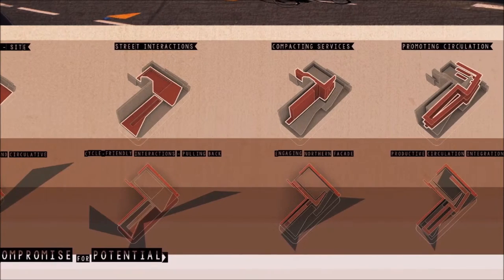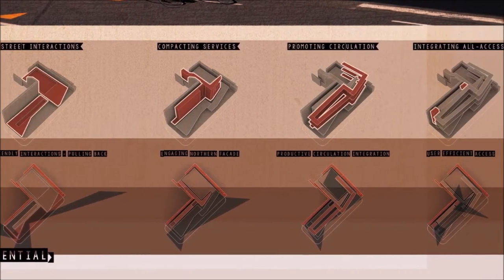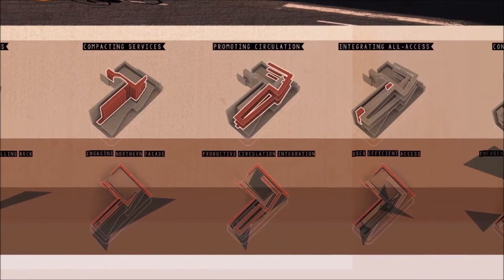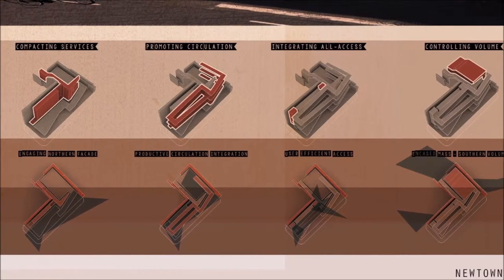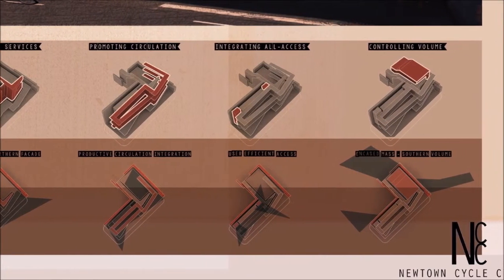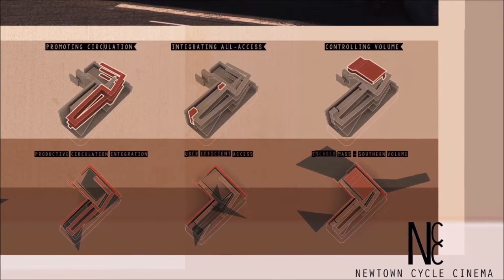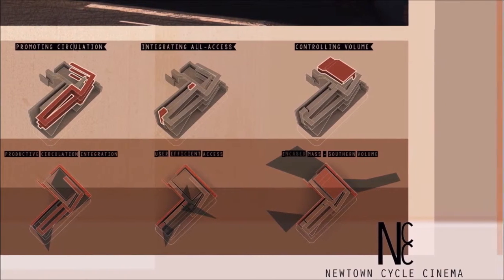The resulting architecture articulates mechanical, kinetic and proportional elements from the cycle on multiple scales. Within this building, the cycle becomes an object to be considered, a point of exhibition and study for a changing urban transportation network.